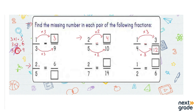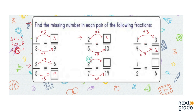Next we have 2 over 5, and 2 has been multiplied by 3 to give 6, so we multiply the denominator 5 by 3 as well, giving 15. For the following example: the denominator 7 is multiplied by 2 to make 14, so we multiply the numerator 2 by 2 as well, giving 4. The equivalent fraction becomes 4 over 14.